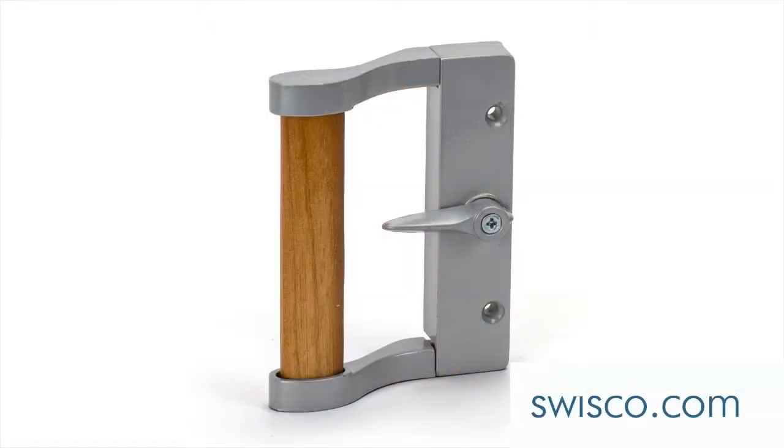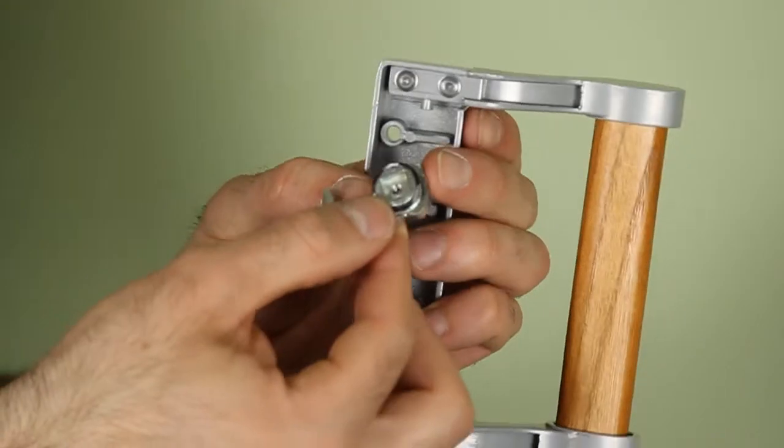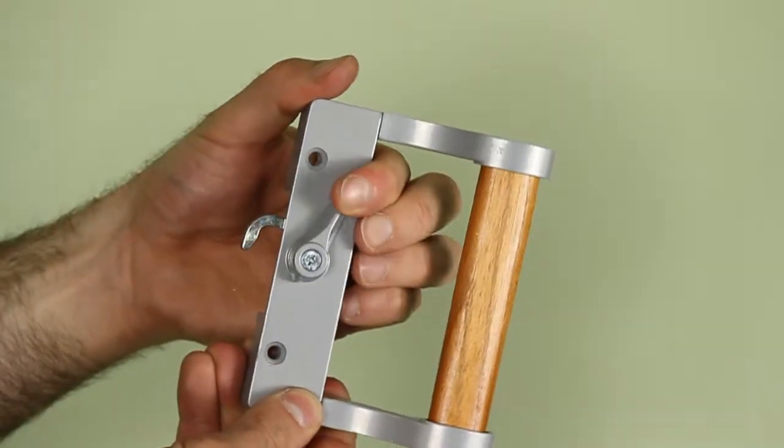Hey, it's Mike from SWISCO.com and today I'm going to quickly show you how you can reverse the locking mechanism on the 82013 patio sliding door handle set so it can lock from either the left or right side.